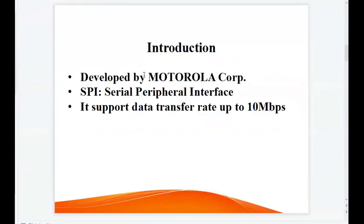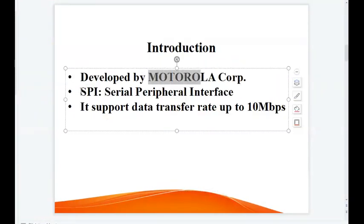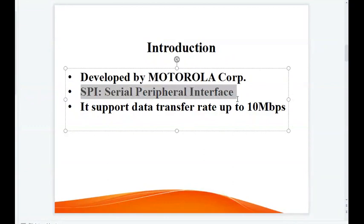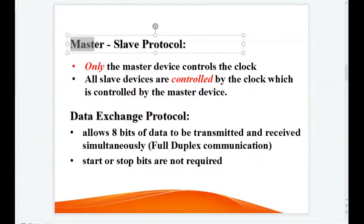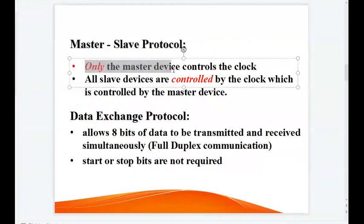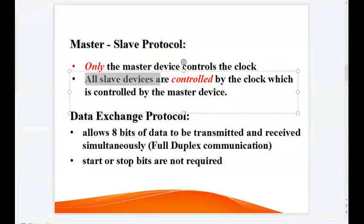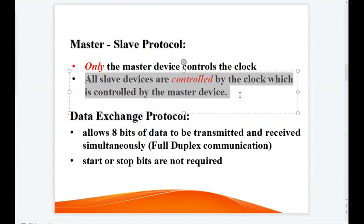The SPI protocol was developed by Motorola. SPI is an acronym for Serial Peripheral Interface, and it supports data transfer rates up to 10 Mbps. SPI is a master-slave protocol — only the master device controls the clock, and all slave devices are controlled by that clock.